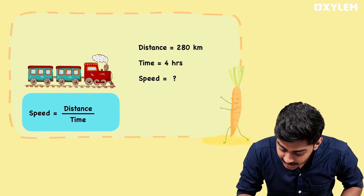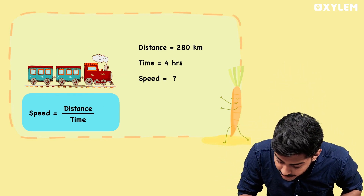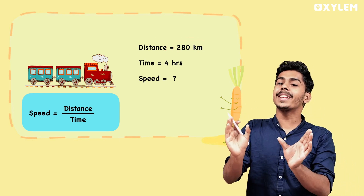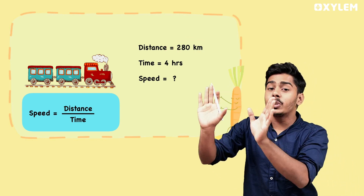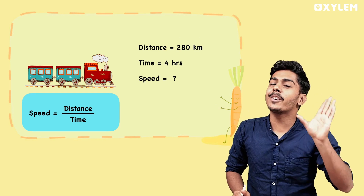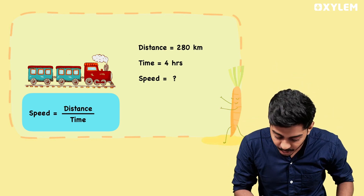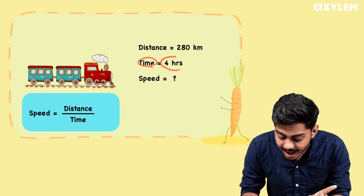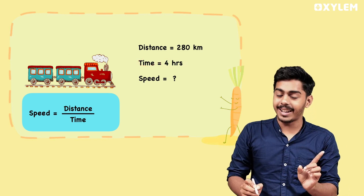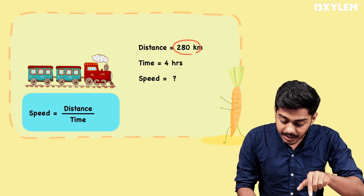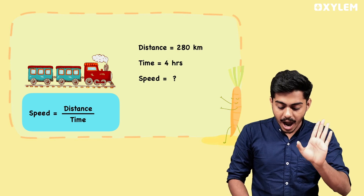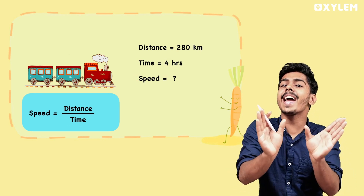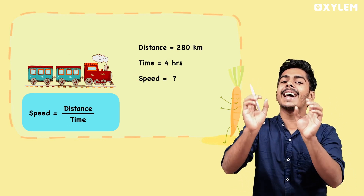We are going to share a train. This train has a distance of 280 km. It is a distance of 280 km. After the train means 250 km, it will have 4 ijayan meters. Here is a train.